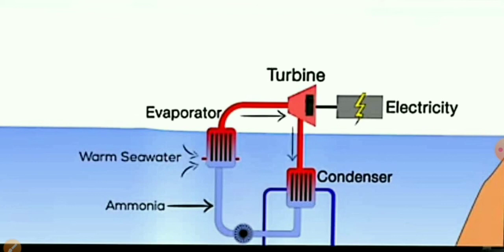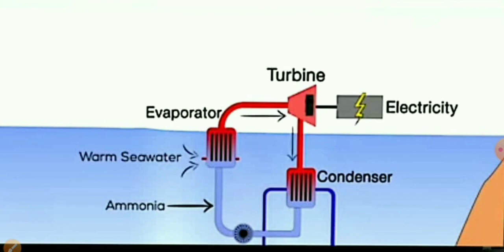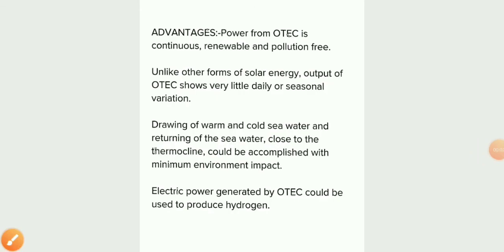The turbine moves because the evaporated working fluid expands into it. The turbine rotates, driving the generator to convert mechanical energy into electrical energy. Water is pumped up from deeper levels, and the vapor is again converted back to liquid — and this cycle continues again and again.